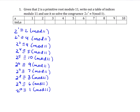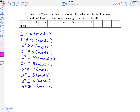So now we can fill in the table of indices. Keep in mind the index of a number is the power that you need to raise 2 to get that value. The index of 1 is 10. The index of 2 is 1. The index of 3 is 8. The index of 4 is 2. The index of 5 is 4. The index of 6 is 9, since that's the power you raise 2 to get 6. The index of 7 is 7. The index of 8 is 3. The index of 9 is 6. And the index of 10 is 5.